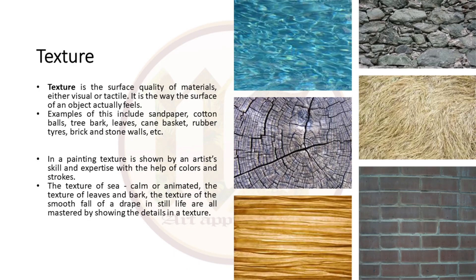After colors, we come to the next element called texture. Texture is the surface quality of materials — how the surface actually feels. It could be rough like sandpaper, soft like a cotton ball, or harsh like brick or stone walls. But remember, in a painting texture cannot be felt; you have to show it by the expertise of colors, details and your strokes.